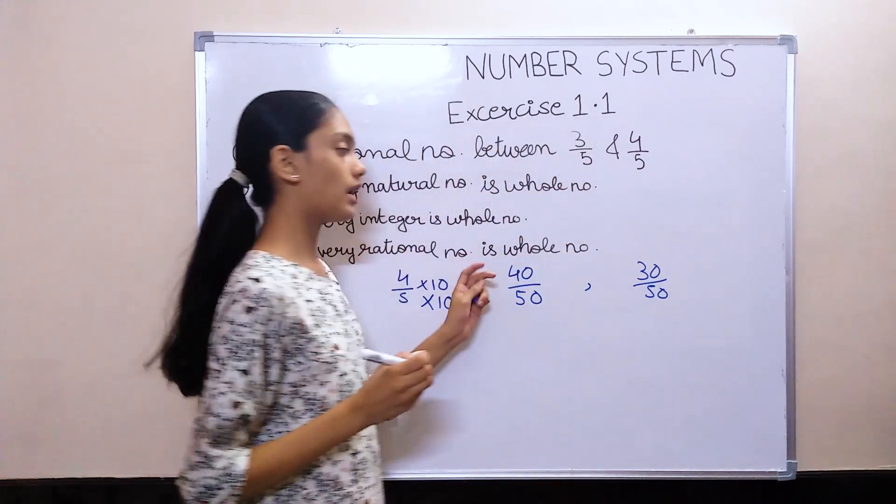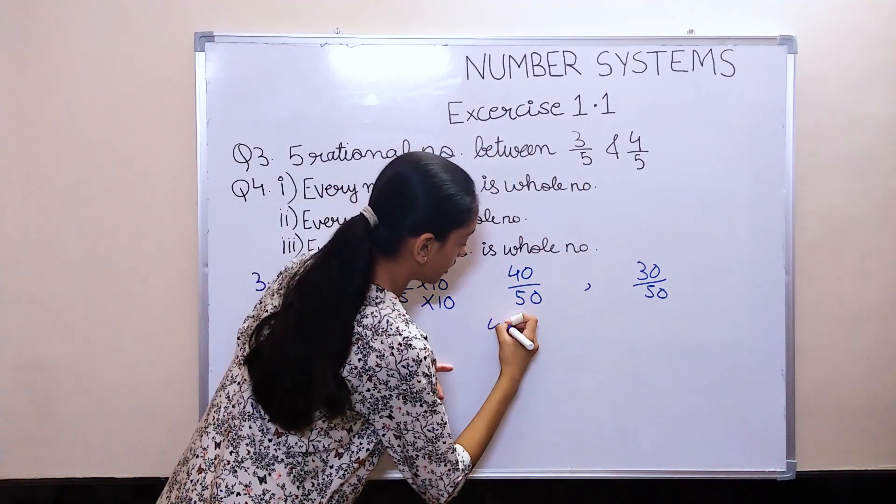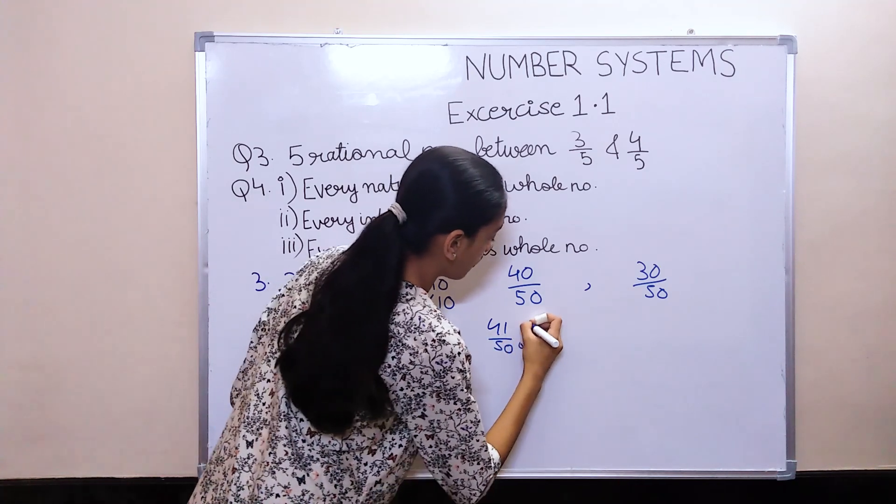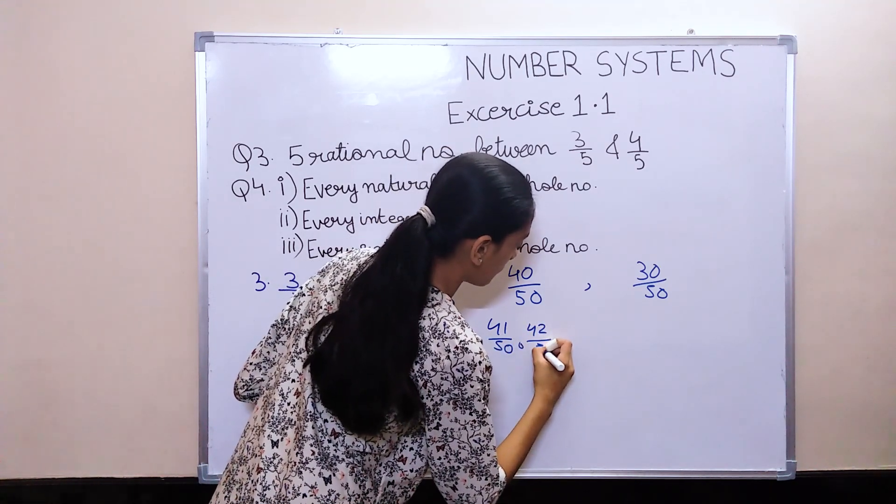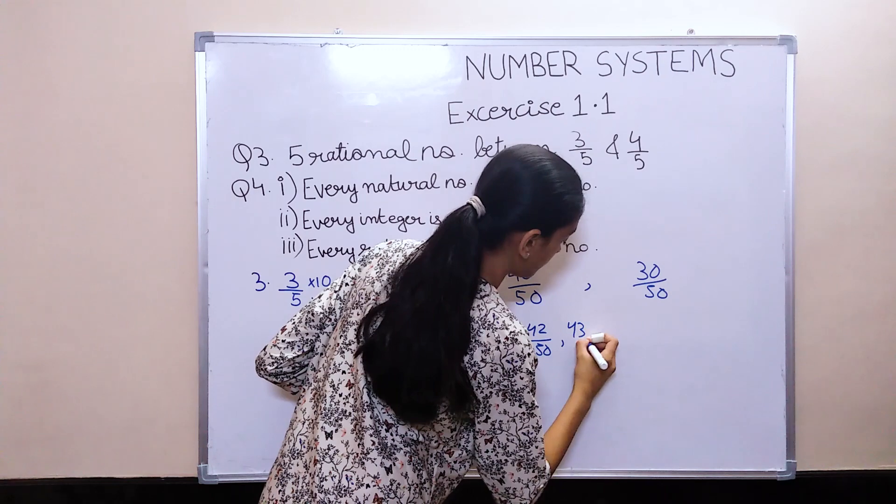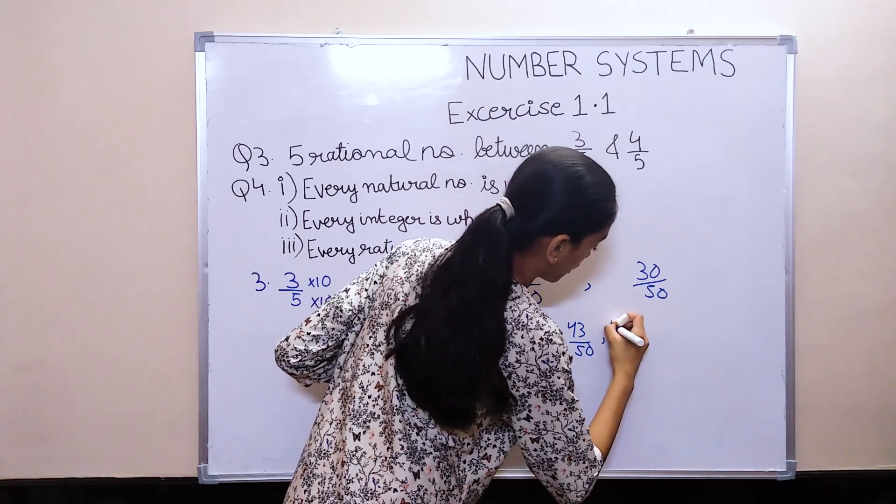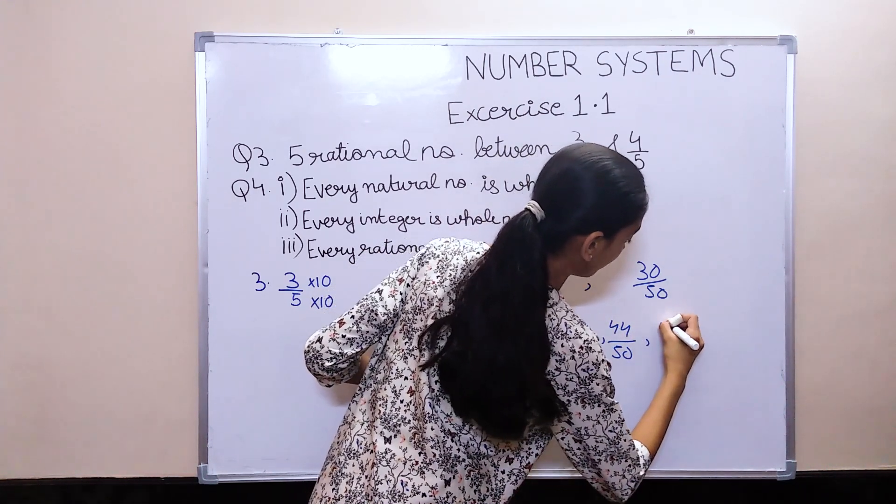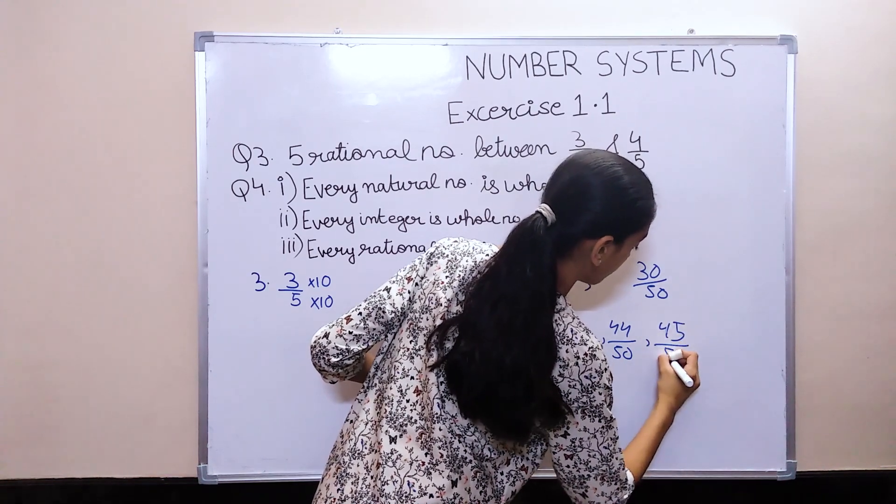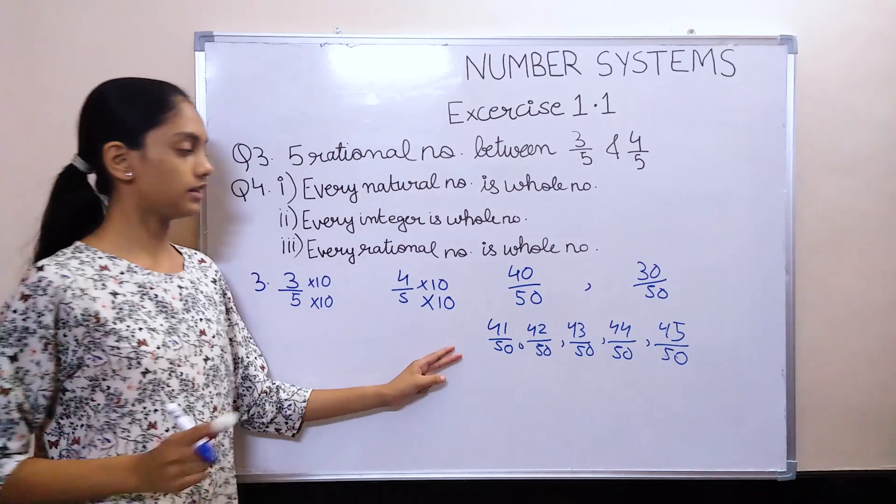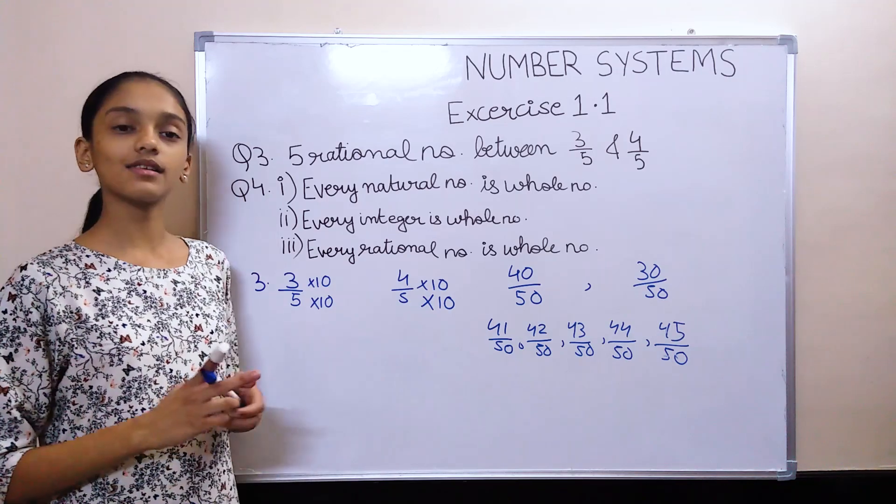Now we have to write 5 numbers between them. We can write 41 upon 50, 42 upon 50, 43 upon 50, 44 upon 50, and 45 upon 50. You can even convert them into their simplest form.